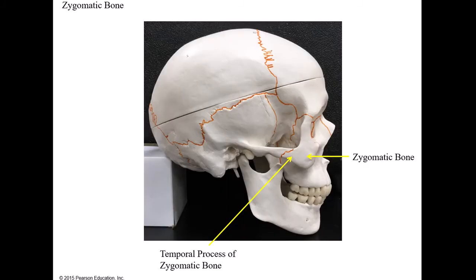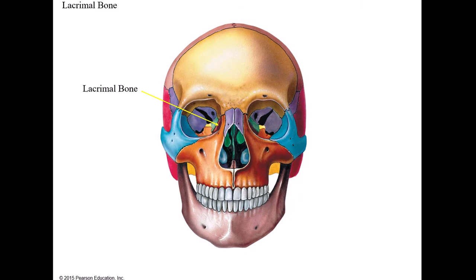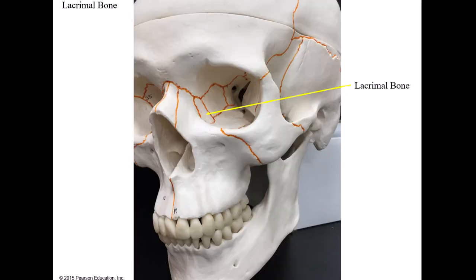Here are the zygomatic bones with the temporal process - a process being an extension of bone. The next two bones are the lacrimal bones, located on the medial side of the orbit. The lacrimal bones have a little groove with a drain or hole that brings tears down into the nasal cavity - that's why when someone cries they need a tissue. Here's a picture showing the lacrimal bone, which almost looks like a teardrop.